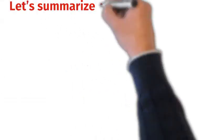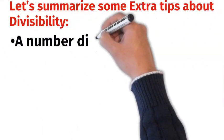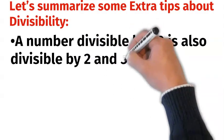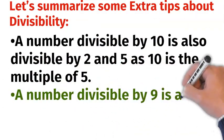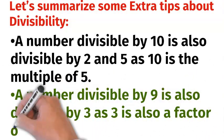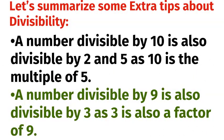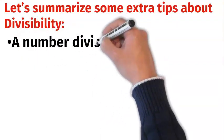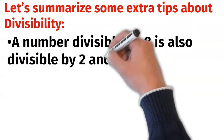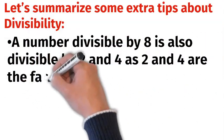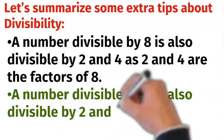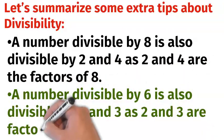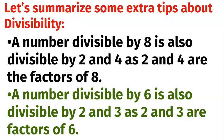Let's summarize some extra tips about divisibility. A number divisible by 10 is also divisible by 2 and 5, as 10 is a multiple of 5. A number divisible by 9 is also divisible by 3, as 3 is also a factor of 9. A number divisible by 8 is also divisible by 2 and 4, as 2 and 4 are factors of 8. A number divisible by 6 is also divisible by 2 and 3, as 2 and 3 are factors of 6.